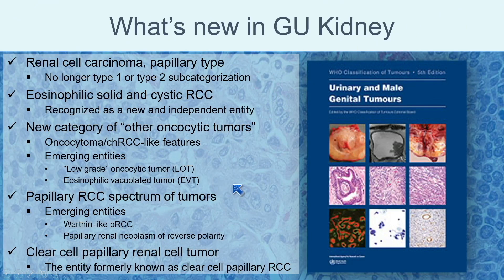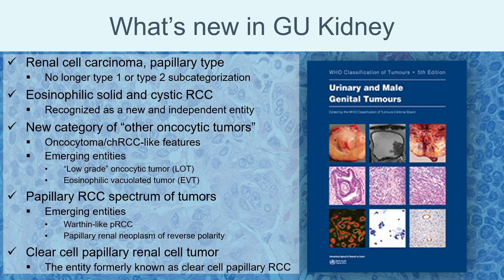What's new in kidney on the new WHO? The new WHO has greatly expanded the renal section. RCC papillary type is no longer subtyped as type 1 or type 2 — we do not use that subclassification anymore. If you see a papillary RCC, we just call it RCC papillary type. In terms of new entities recognized by the WHO, eosinophilic solid and cystic RCC — which was described by our group — is one of the newest recognized independent entities, and I will briefly touch on that today.